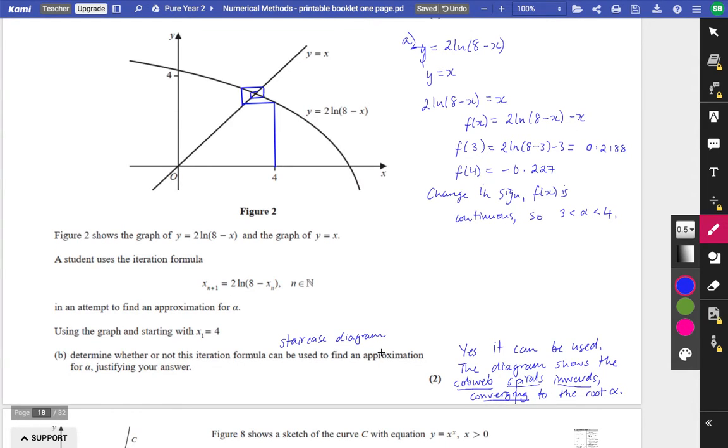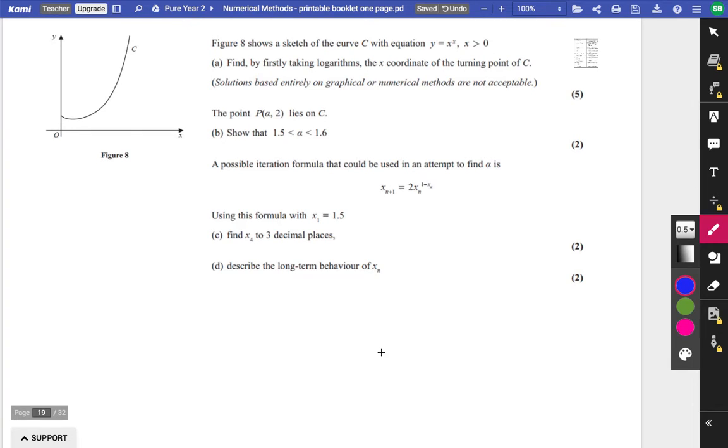I'll leave this question here for you to have a look at and to pause, and then I will go through this one as well. Okay, it says figure 8 shows a sketch of the curve with equation y equals x to the x, only for the portion where x is greater than 0 for that domain. First of all, find, by firstly taking logarithms, the x-coordinate of the turning point of C. So we've got the turning point of C that's happening here. And it talks about you can't use graphical or numerical methods for this bit. But in order to do this, this isn't really to do with iteration, but it's a nice refresher of some of the other things.